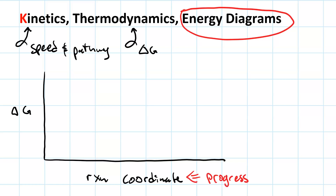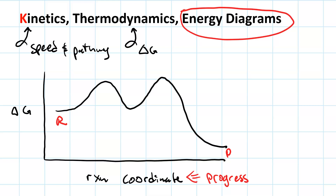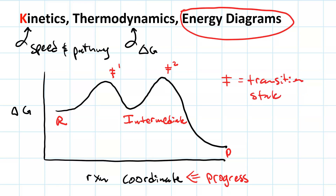Think of the reaction coordinate as the progress of the reaction. On a sample reaction coordinate diagram, your reactants live at the start, your products at the end. Because there are two humps in the middle, the valley between them is where your intermediate lives, and you've got a transition state at each hump — Delta double-dagger 1 and Delta double-dagger 2.